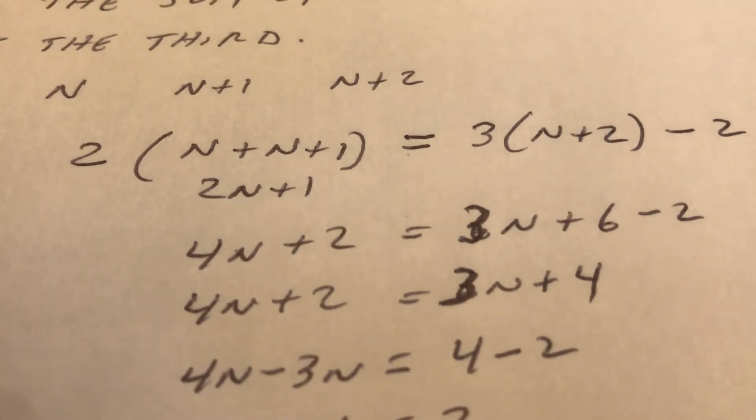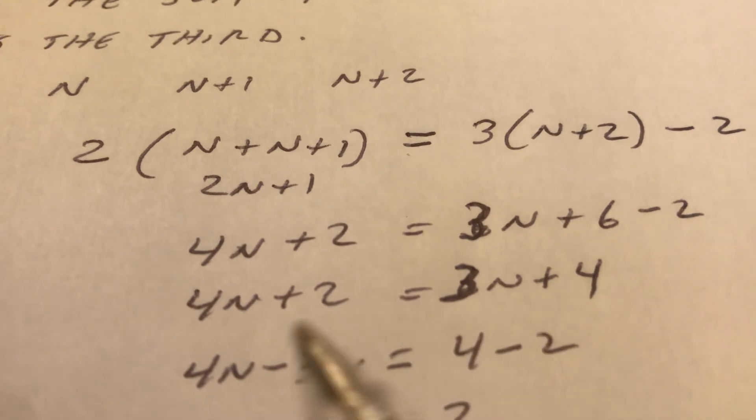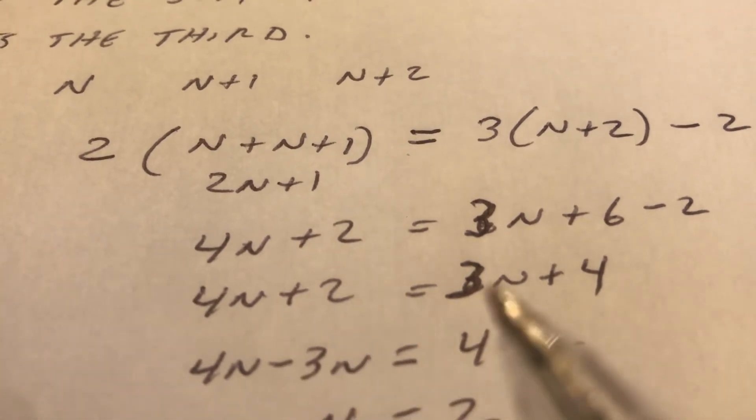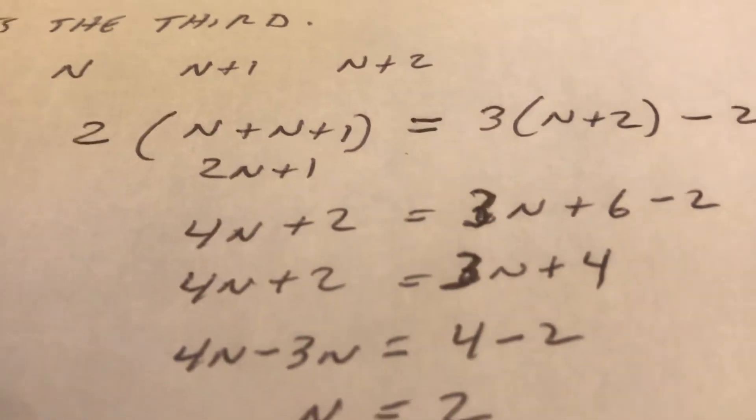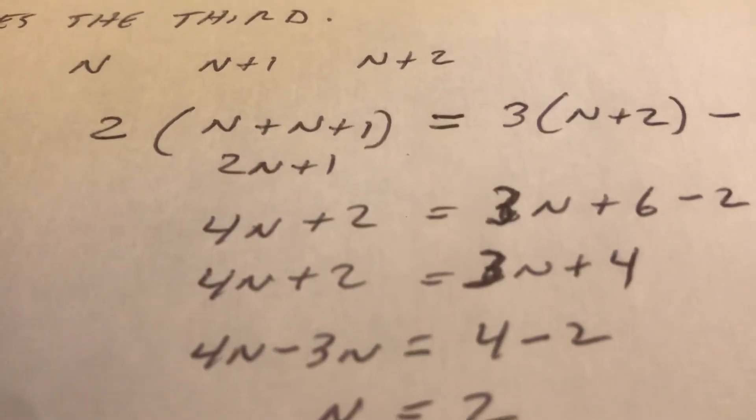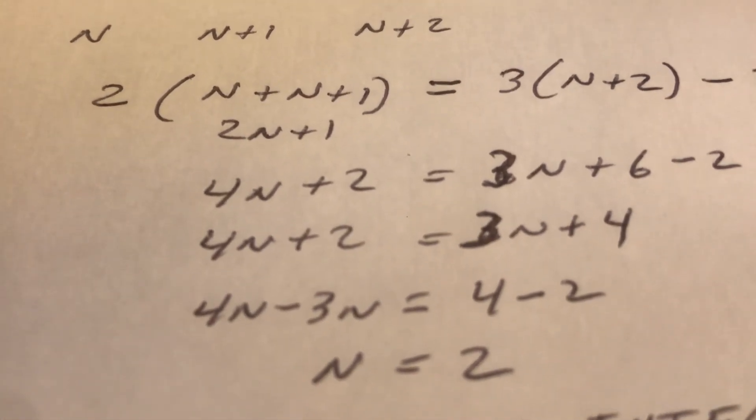I subtract 3n from this side, subtract 2 here. Or you can just move it to the other side, changing sign. 3n becomes minus 3n. 2 becomes minus 2. And so you get 4n minus 3n equals 4 minus 2. n equals 2.